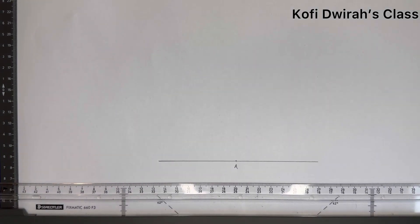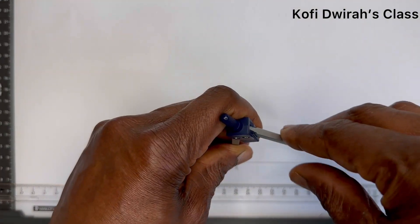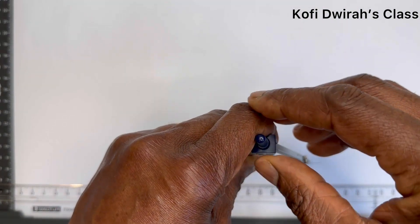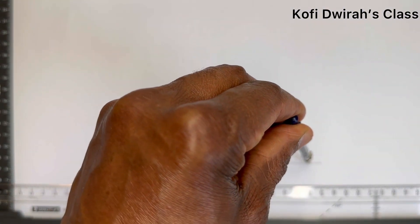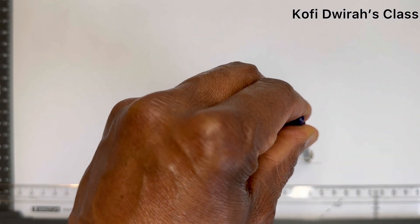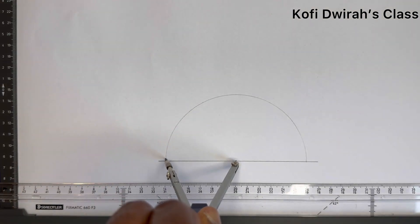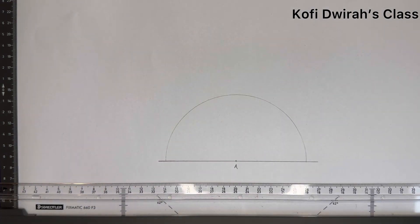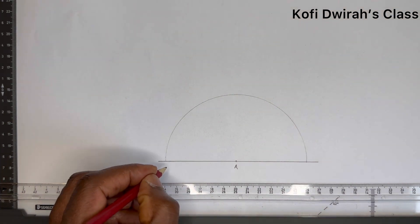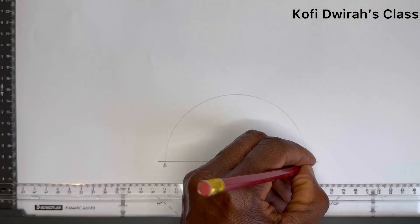At point A, open your compass to any radius. Place the compass on the line and draw an arc. This gives us two points where the arc crosses the line — we call these point B and point C.